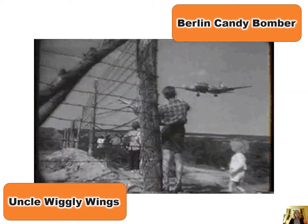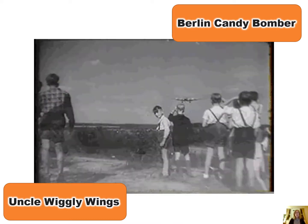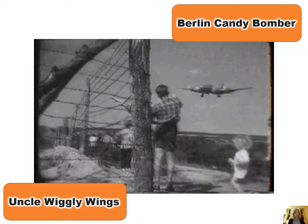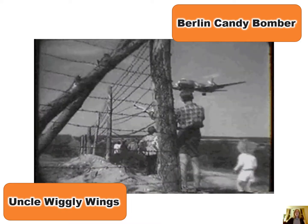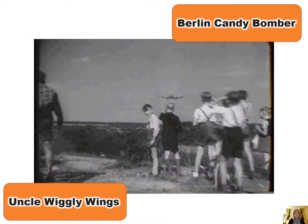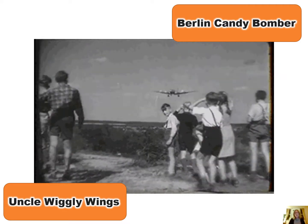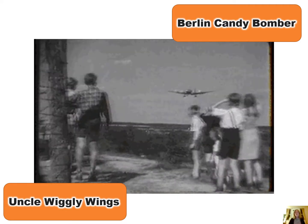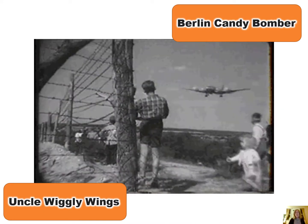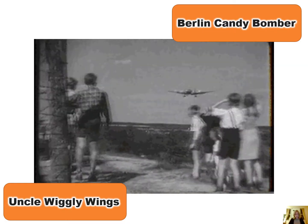He was so impressed that he said, 'I'm going to come back, fly my airplane, and bring you all candy.' The kids asked, 'How will we know it's you?' He said, 'I'm going to wiggle the wings of my airplane — that's how you'll know it's me.' So he became known as Uncle Wiggly Wings, and he flew several flights bringing candy and treats for the children and dropping them over Western Berlin.